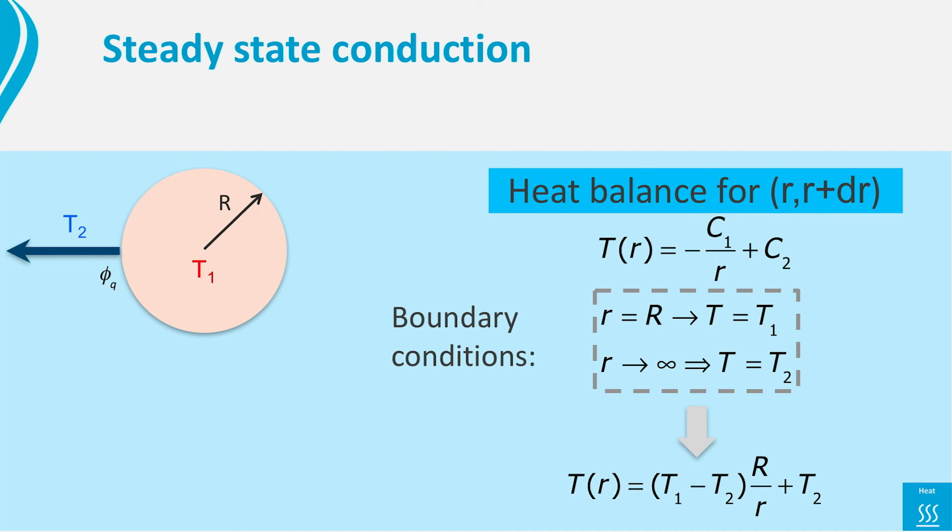If we substitute these boundary conditions in our general solution, we find the temperature distribution outside the sphere. T is the temperature difference between the surface of the sphere and far away, multiplied by capital R over small r plus T2.